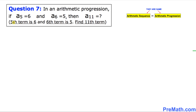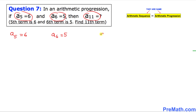In other words, it states the 5th term is 6 and the 6th term is 5. Find the 11th term. Let's talk about a(5) equal to 6 — I am going to write that right up here. And now let's talk about a(6) equal to 5. We have to be really careful. Then we are going to find a(11).